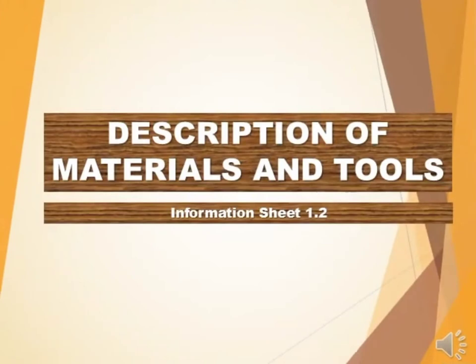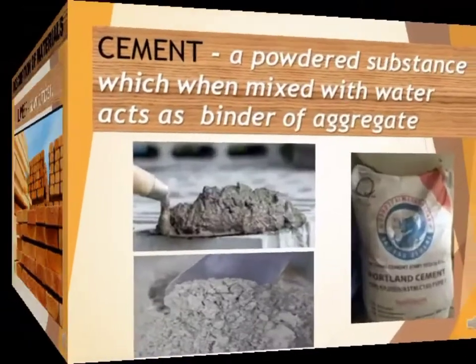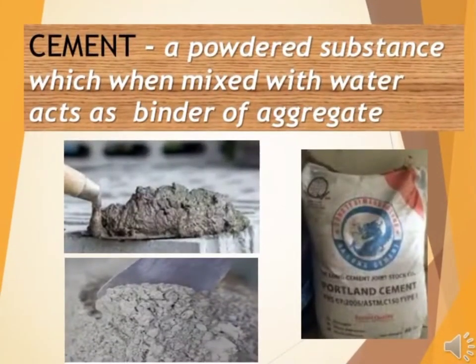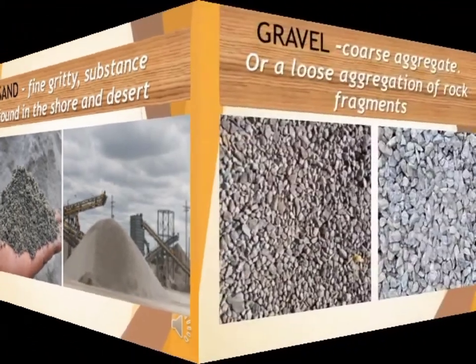Let's move to the description of materials and tools. Lumber — it is a sawn timber. Next, we have Cement — it is a powdered substance which, when mixed with water, acts as a binder of aggregates. Next, we have Sand — it is a fine, gritty substance found on the shore and desert.